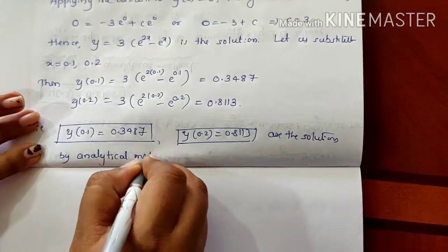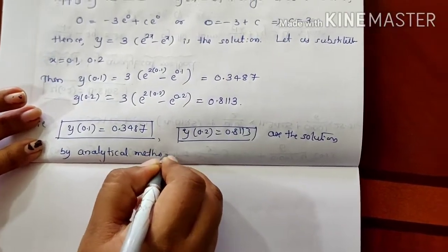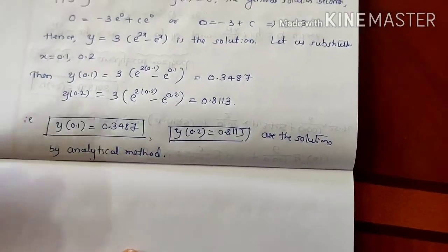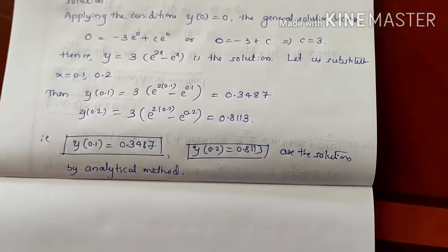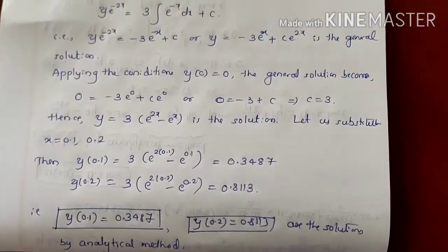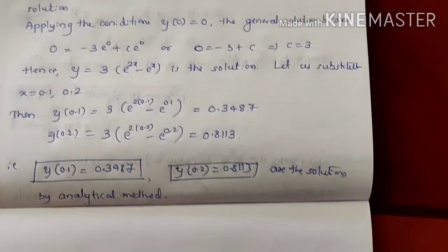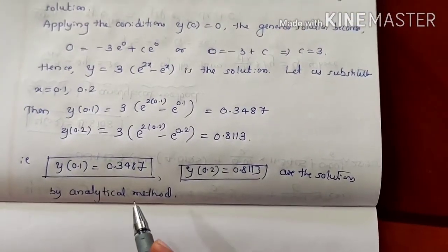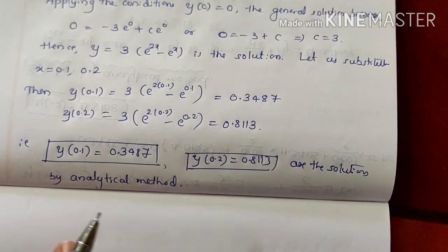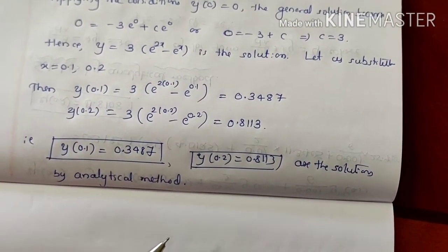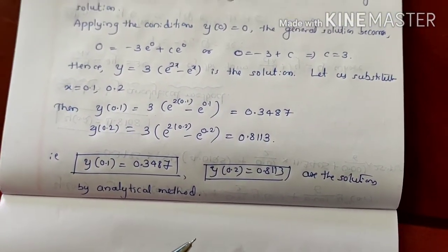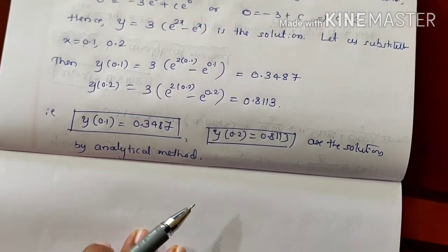Just compare the numerical solution and analytical solution — they are slightly different in the decimal places. That is it. Thank you. In the next class, I will start the next method: Modified Euler's method.